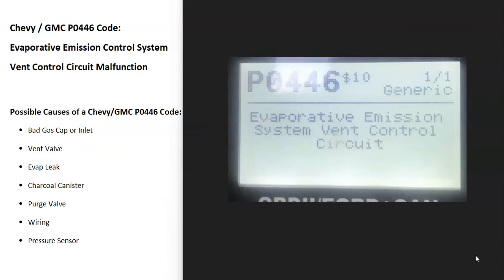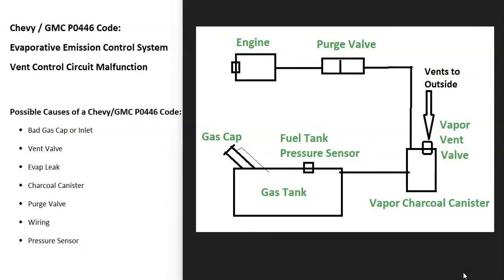What does this mean? Modern vehicles have what's called an EVAP system that basically takes all the gas vapors from the gas tank and feeds them back up to the engine to get burnt off, so they don't escape into the atmosphere. This is for emissions and the onboard computer is seeing a problem inside of this. There can be some differences depending on the year and the type of Chevy or GMC, so it's always a good idea to get a diagram for your specific vehicle.